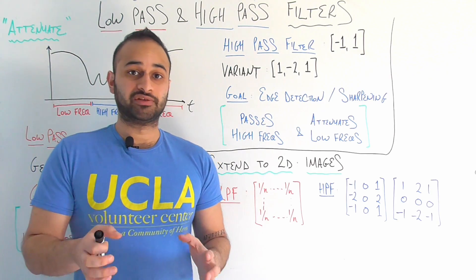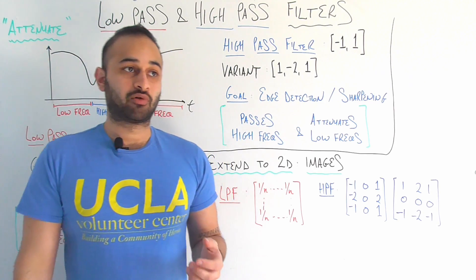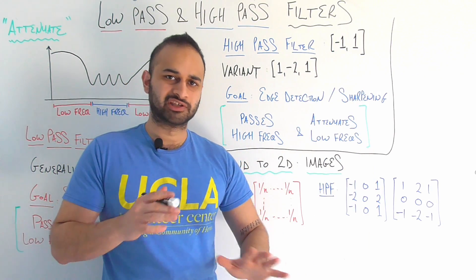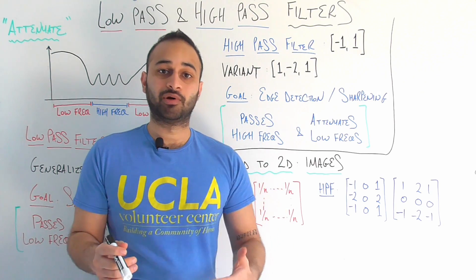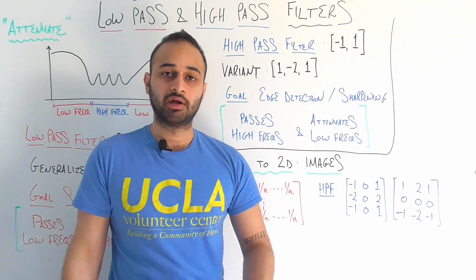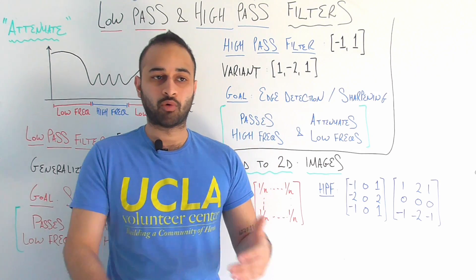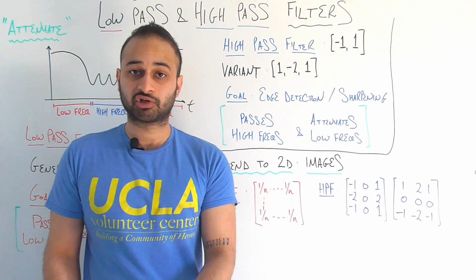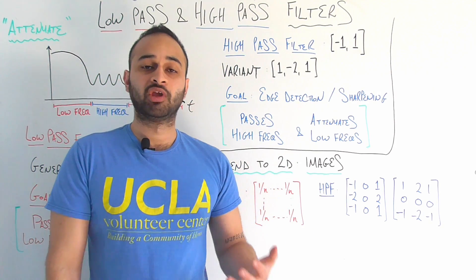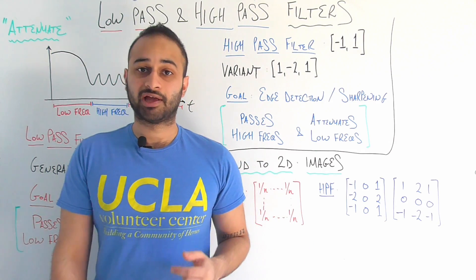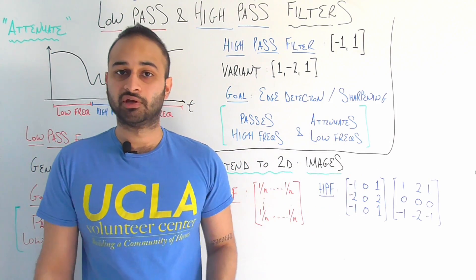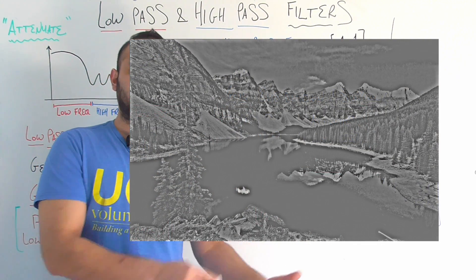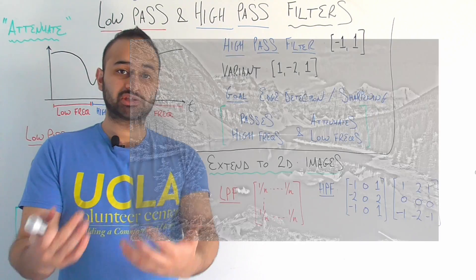Now if we want to find all the edges in the image — where things are changing the most — we'd expect the strongest edges not in the sky or water where things are smooth, but where trees meet air or water meets something else. Applying what are called Sobel filters, which are widely used for horizontal and vertical edge detection, and combining them, we get an image where the areas lighting up are exactly where the image is changing the most — the edges.